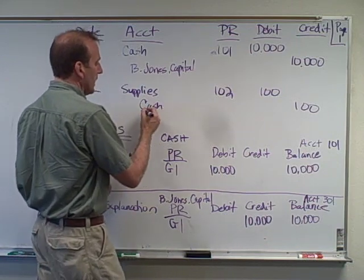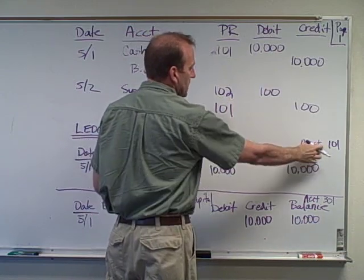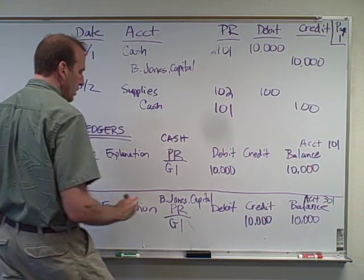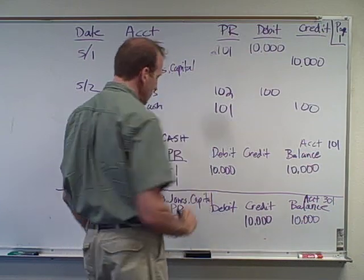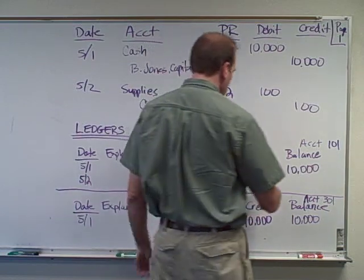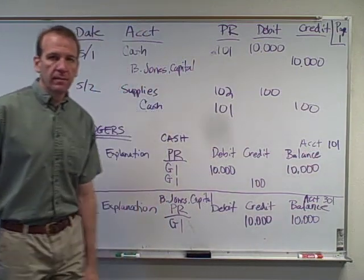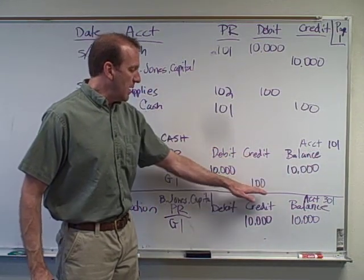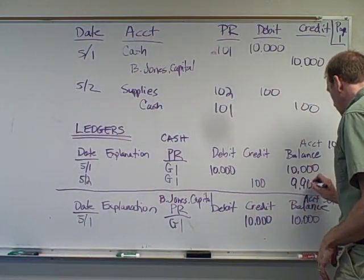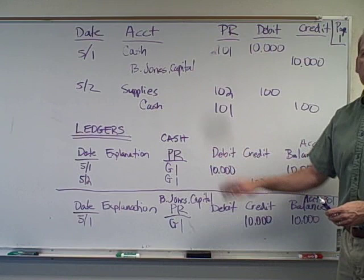Now I've got to go to my cash account. The cash account is account number 101, so I'm going to take this and put it in 101. I put the date, 5-2. It's coming from G-1, page one of the general journal. Now this is a credit, so it's going to be $100 credit. What's my overall balance? Well, I had $10,000. Now I'm crediting it, so that's a reduction. I'm going to reduce this by $100, so it's going to be $9,900 — that's my balance in my cash ledger.